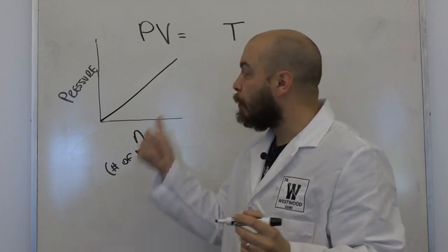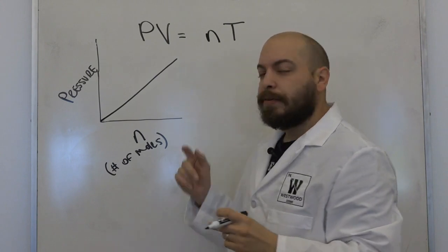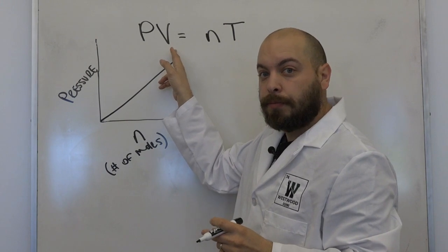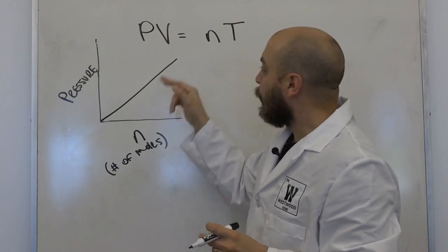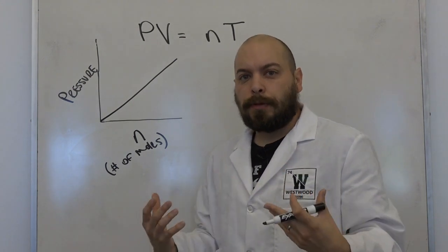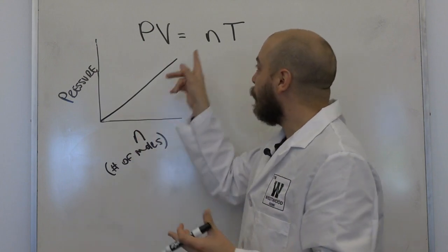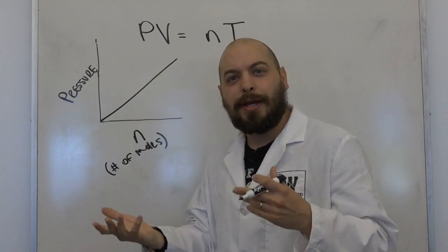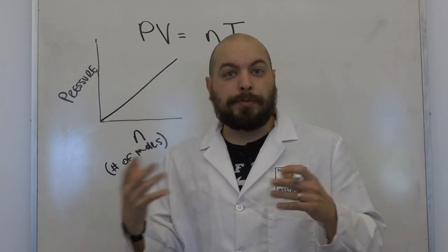Just like with temperature, number of moles has a direct relationship to pressure, which tells us it's going to be on the other side of the equation. So right now we have PV, which are inversely related to each other, and we have n and T, which are both directly related to P. I always go back to pressure because it's easier to conceptualize — I then use those relationships to relate each variable to the others.